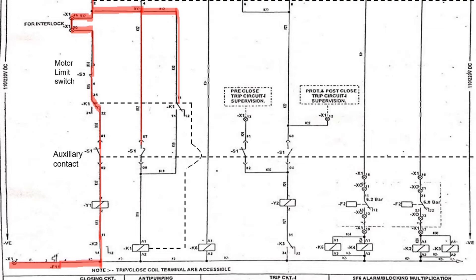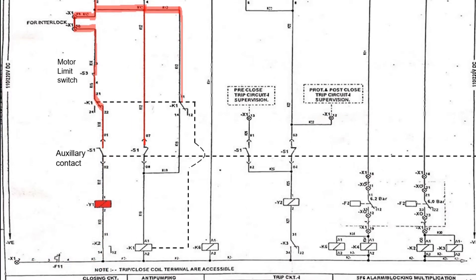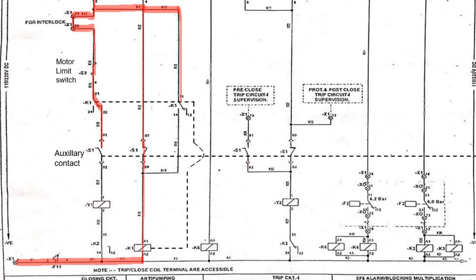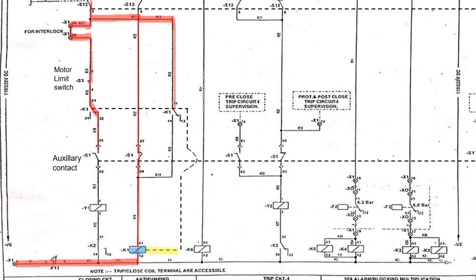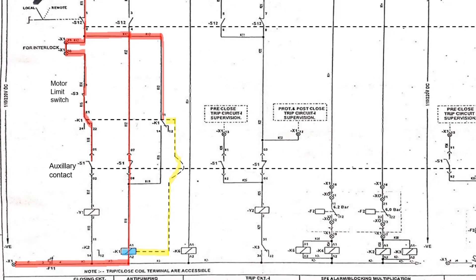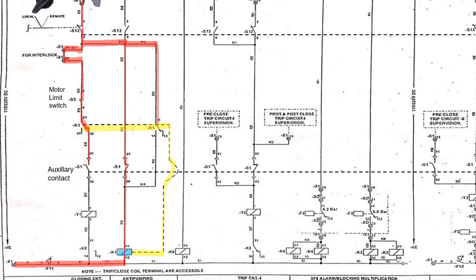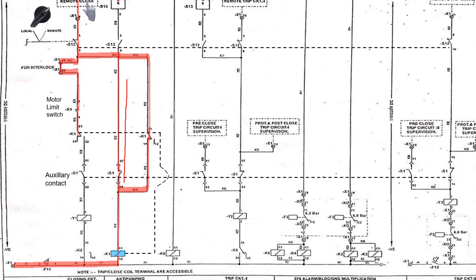Thus, energizing the closing coil Y1 and the circuit breaker closes. As soon as the circuit breaker closes, the auxiliary contacts S1 operate and change their position — all NO turns to NC and NC to NO — so the current to the closing coil gets cut and it gets de-energized. Simultaneously, the K1 anti-pumping relay is energized and the contacts of the anti-pumping relay change position — NO contact becomes NC and NC contact turns to NO — forming a closed circuit on the right-hand side and freewheeling the current after the close operation.